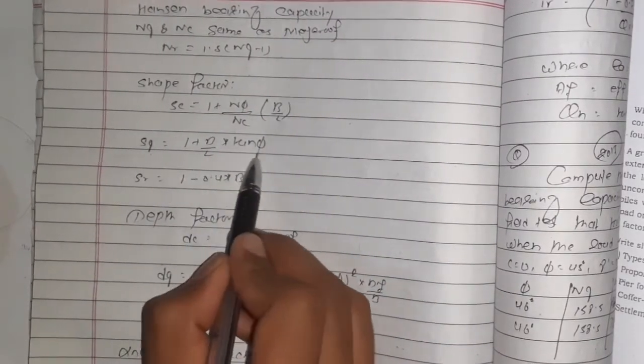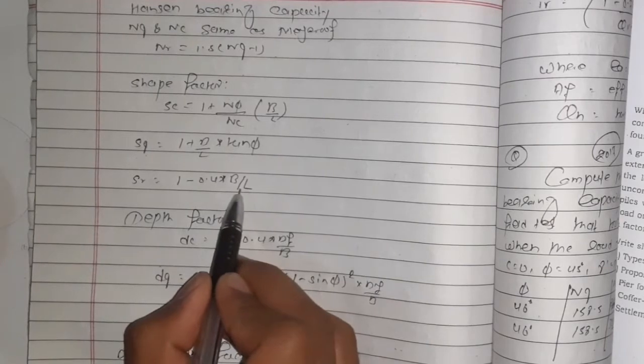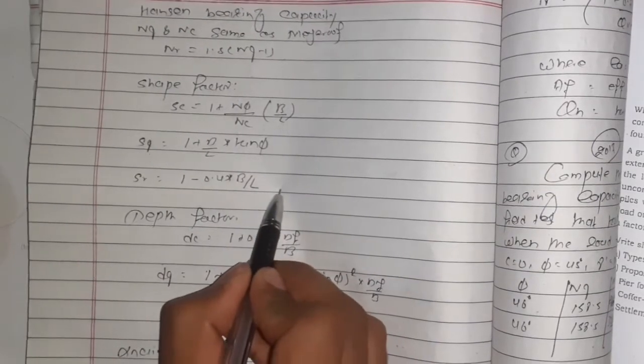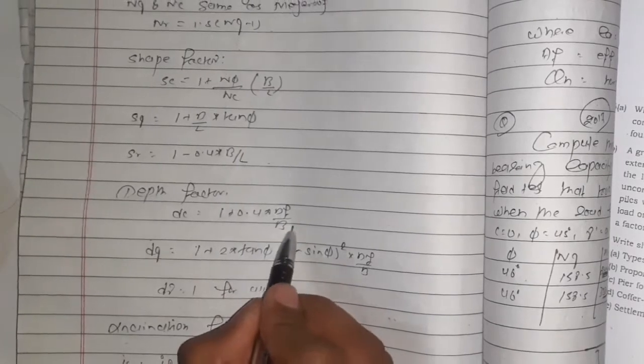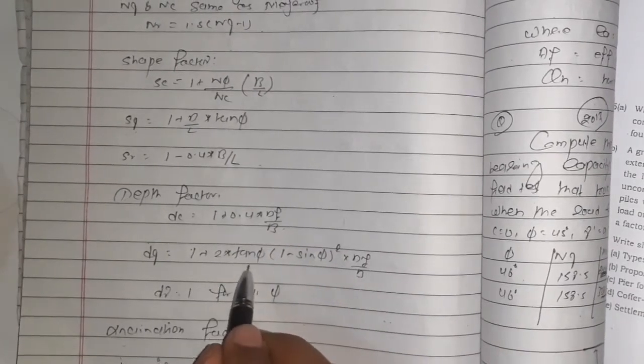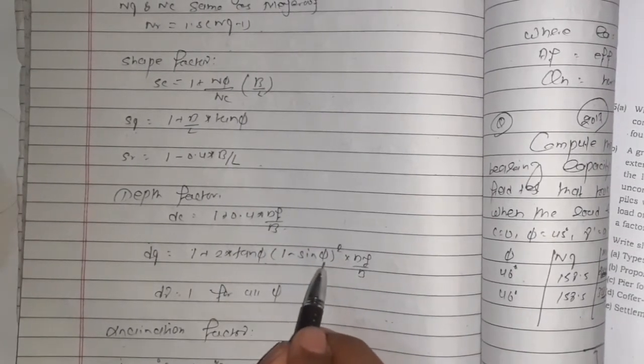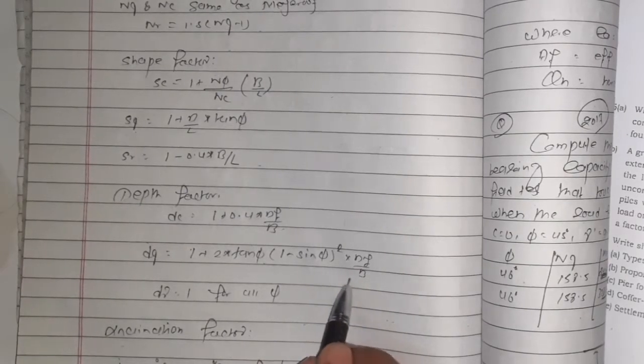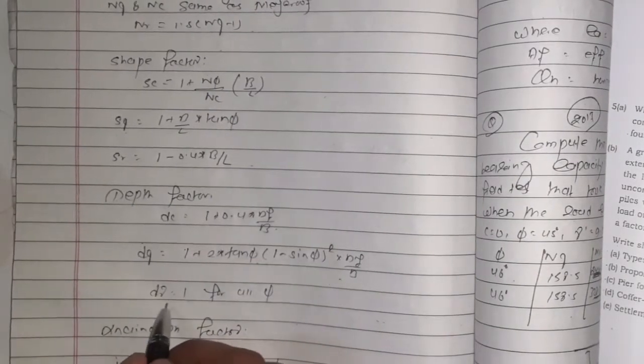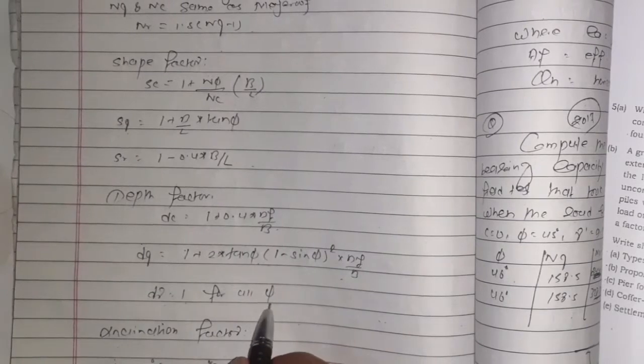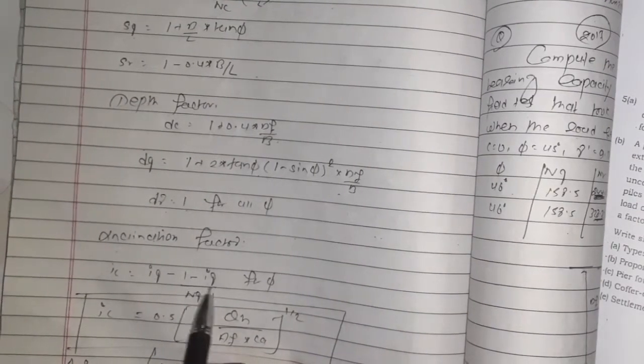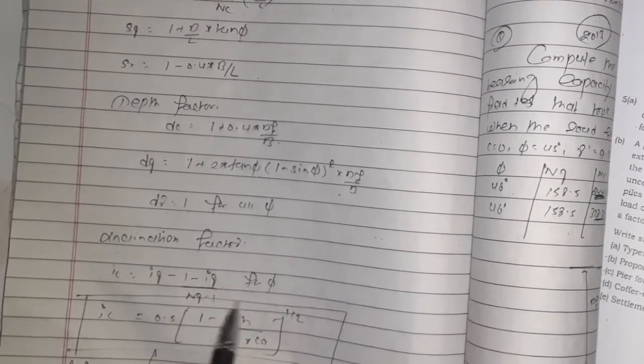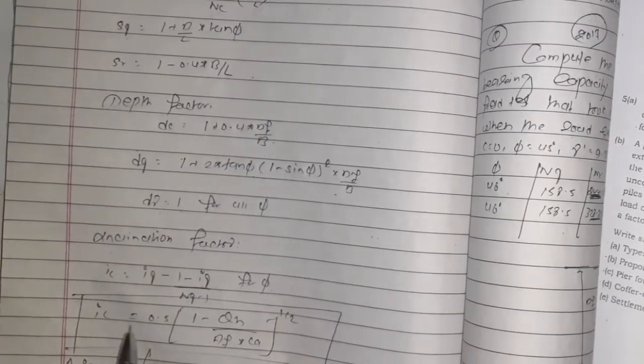sq = 1 + B/L·tanφ, sγ = 1 - 0.4·B/L. Depth factors: dc = 1 + 0.4·df/B, dq = 1 + 2·tanφ·(1 - sinφ)²·df/B, dγ = 1 for all φ. Inclination factors: ic = iq - (1 - iq)/(Nq - 1) for any φ.